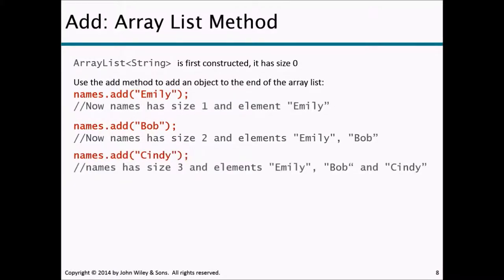Adding names.add("Cindy") makes the list size three, with elements Emily, Bob, and Cindy. Elements are stored in sequential order starting with index 0, then index 1, index 2, and so on. All items added using the basic add method are added at the end of the ArrayList.